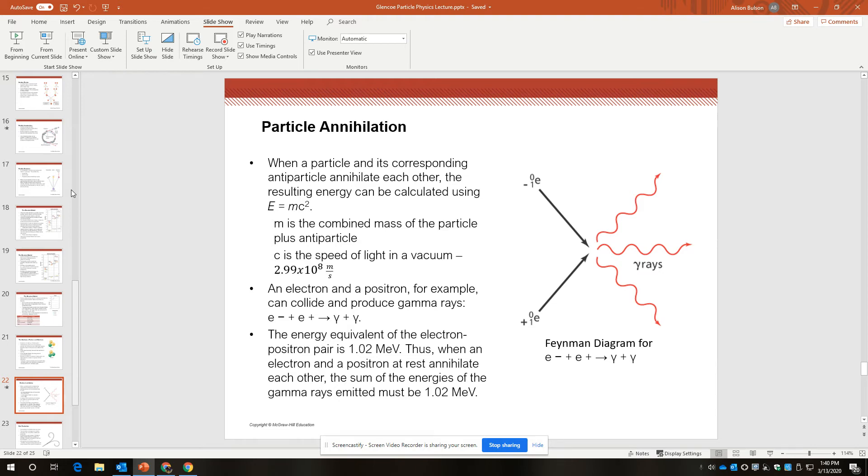An example would be an electron and a positron, an electron and an antielectron, collide, self-annihilate, and produce some gamma rays.